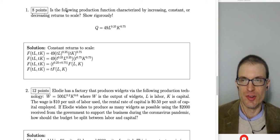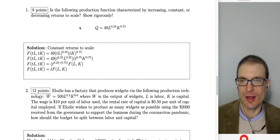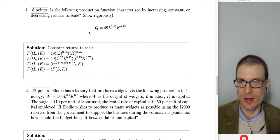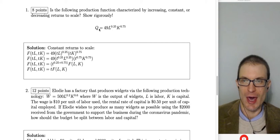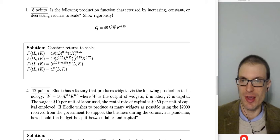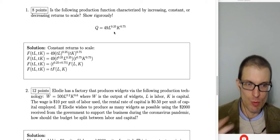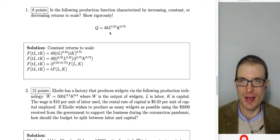Question number one: is the following production function characterized by increasing, constant, or decreasing returns to scale? Show rigorously, as demonstrated in class. The production technology we have here is Cobb-Douglas: Q is equal to 49L to the 0.25 times K to the 0.75. Staring at this, you can sum up the exponents — 0.25 plus 0.75 equals one, so this is constant returns to scale.